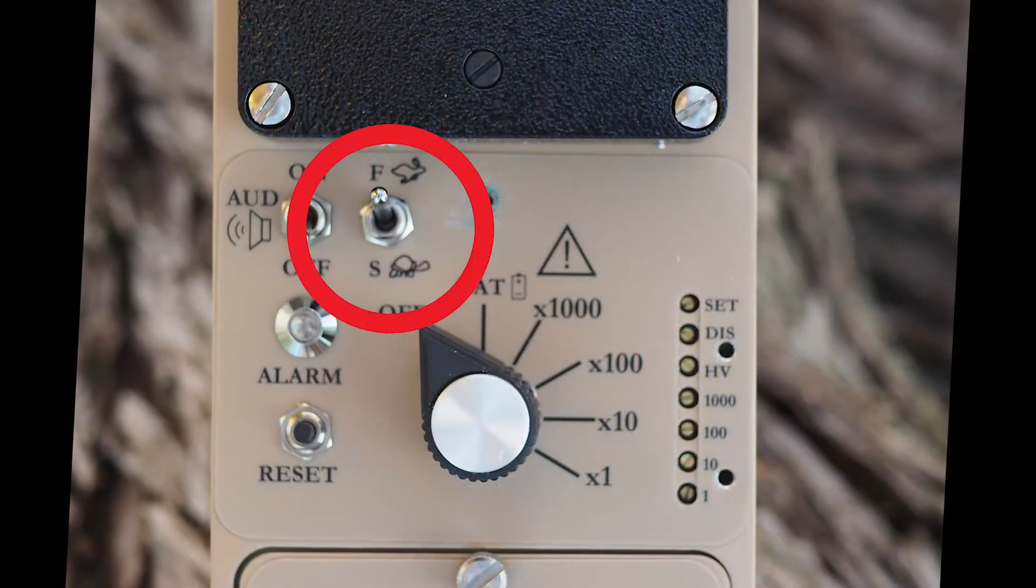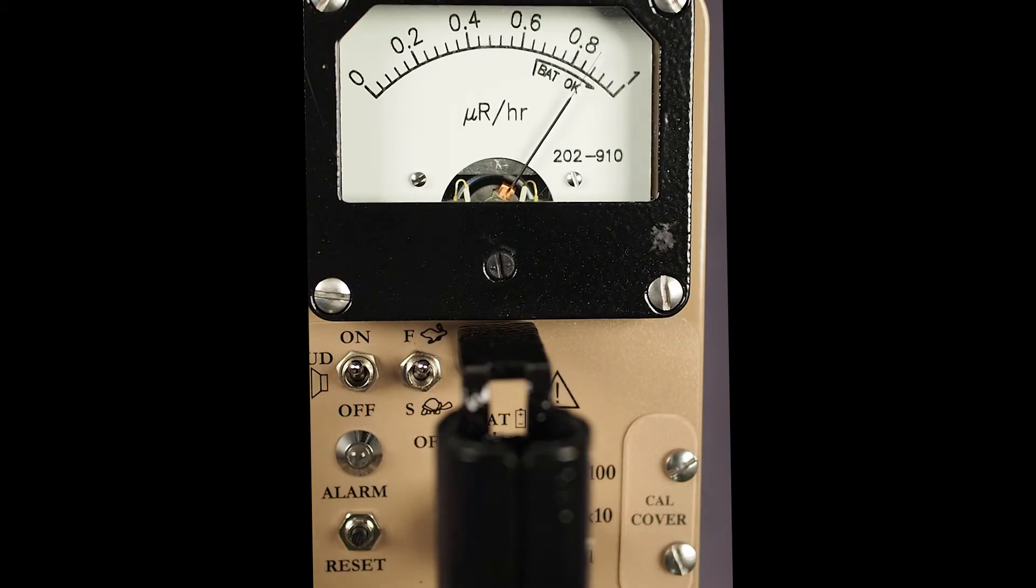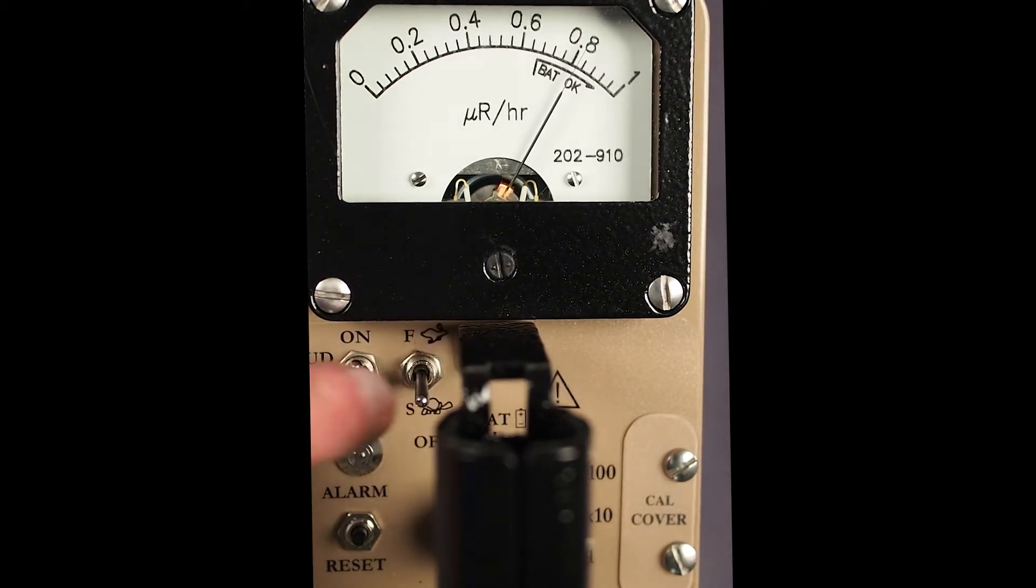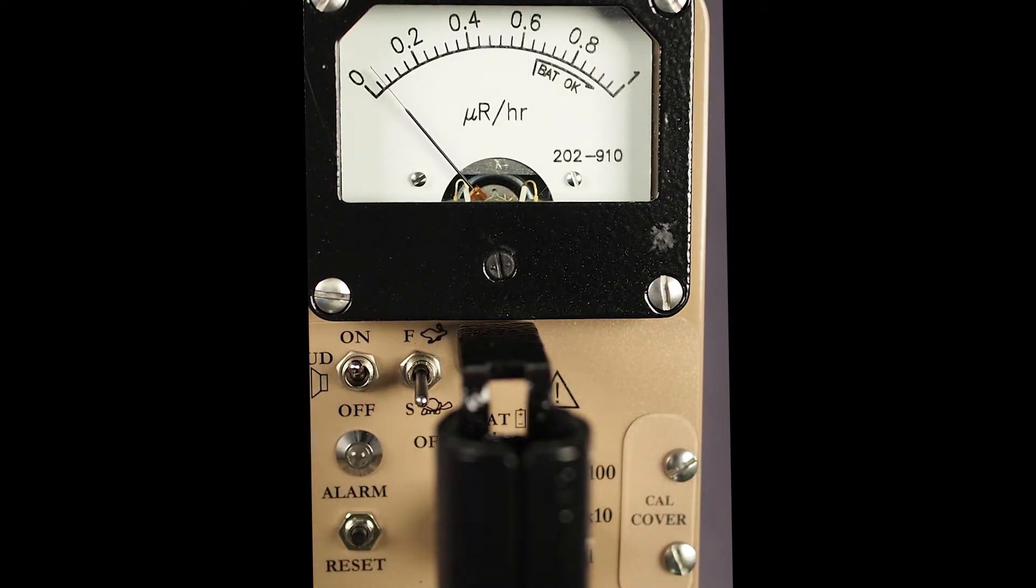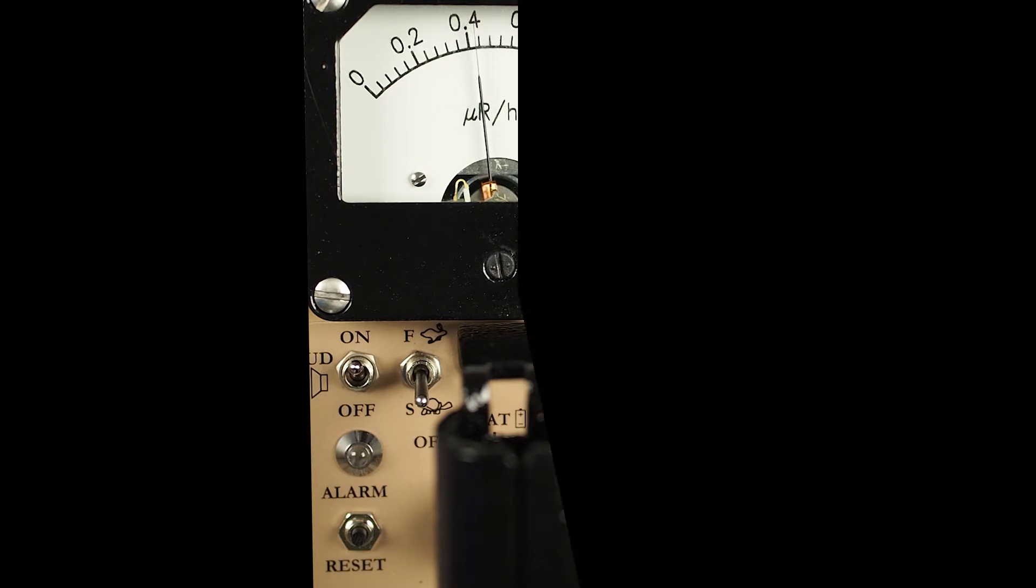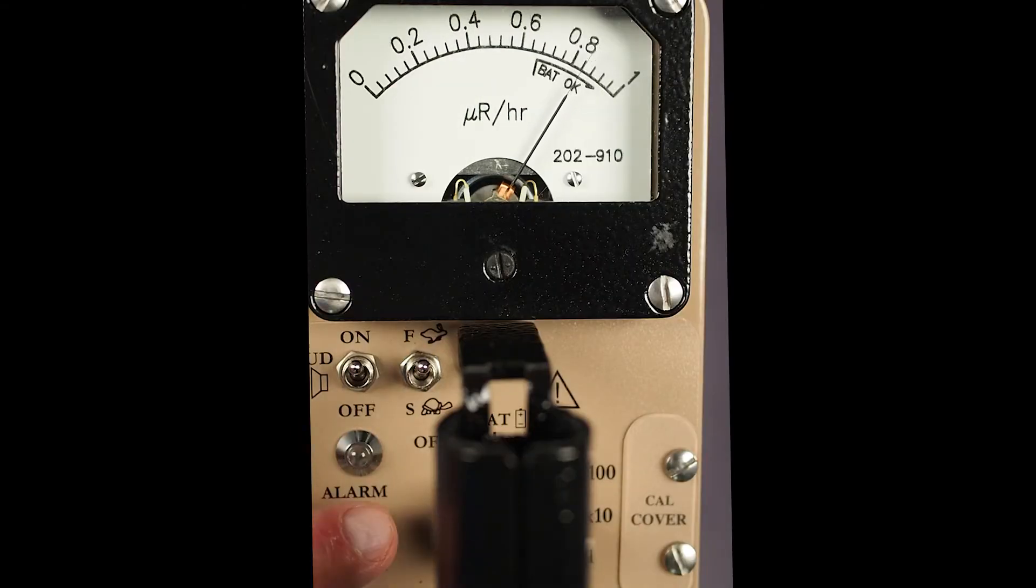The F-S toggle switch determines the meter response time. Selecting the fast, F position of the toggle switch provides 90% of full-scale meter deflection in approximately 4 seconds. In the slow, S position, 90% of full-scale meter deflection takes approximately 22 seconds. In most circumstances, the model 193-6 should be used with the switch in the F or fast position.